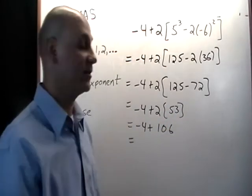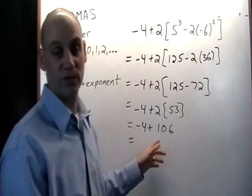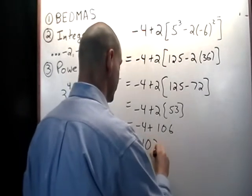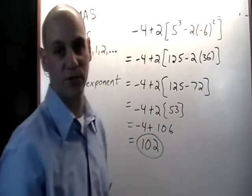And then this is a fairly straightforward calculation, negative 4 plus 106. You can take out your calculator and type it in and you'll get 102 as your answer.